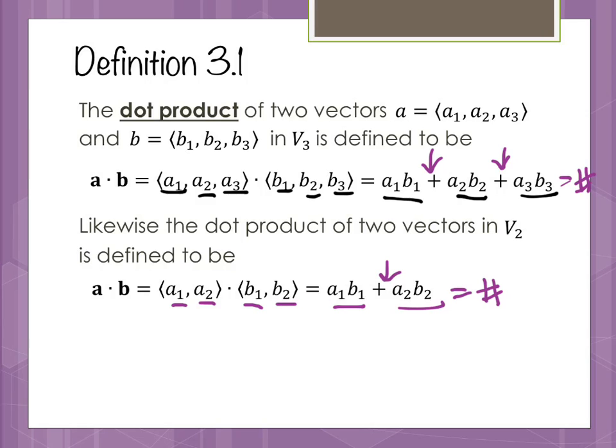It's important to realize that the dot product actually has quite a few of the same theorems we've seen before. It doesn't matter the order — it's commutative. The second property is associativity. We've got some scalar reassociations with the multiplication as well. If we multiply a zero vector times any vector, we get zero. And if we do the dot product of a vector with itself, it's the same as the magnitude squared — like the magnitude without the square root.